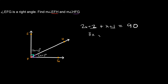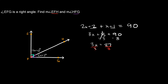Subtract 3 from both sides, so 3x = 87. Then divide both sides by 3, giving us x = 29. Now we plug x = 29 into each expression to find the measure of each angle, starting with angle EFH.